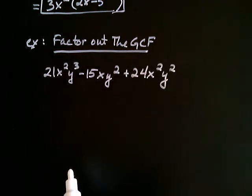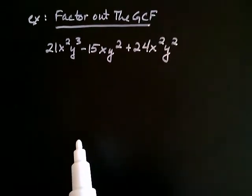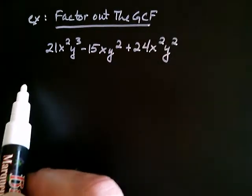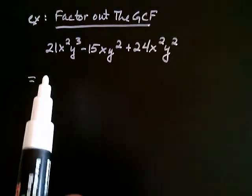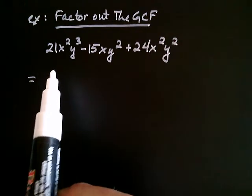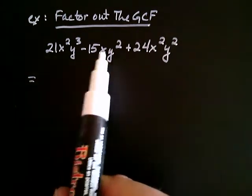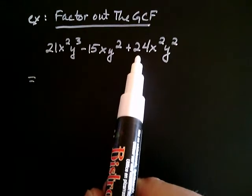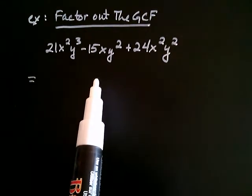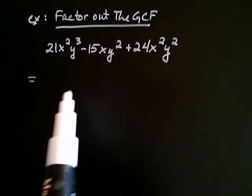Okay, so we're going to use the same logic that we used in the previous example. And the first thing we do is identify the GCF. So, I start with the coefficients: 21, 15, and 24. Do you see the largest number that goes evenly into those? That would be a 3.